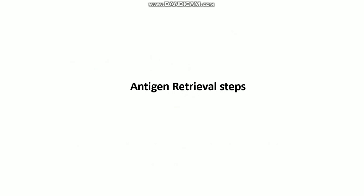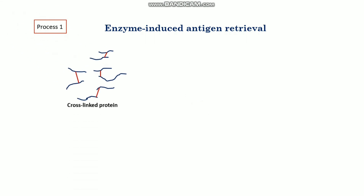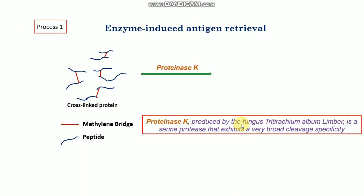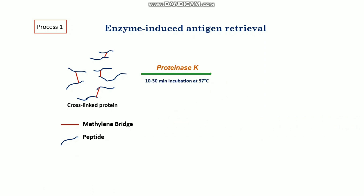Now let's look at the antigen retrieval steps. There are two different methods commonly used. The first is enzyme-induced antigen retrieval, where we use Proteinase K. This enzyme is produced by the fungus Tritirachium album limber, belongs to the serine protease family, and exhibits very broad cleavage activity. The tissue needs to be incubated at 37°C for 10 to 30 minutes.